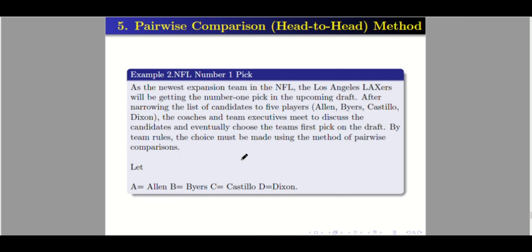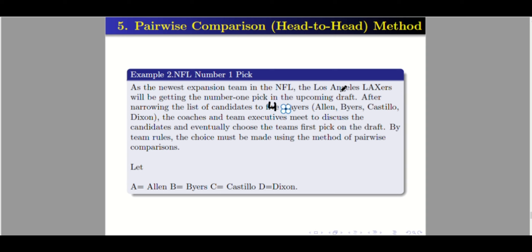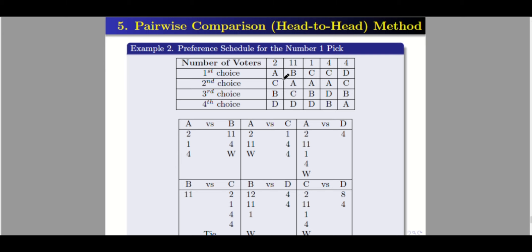For our last example: as the newest expansion team in the NFL, the Los Angeles Likers will get a number 1 pick in the upcoming draft. After narrowing the list to 4 players — Allen, Byers, Castillo, and Dixon — the coaches and executives must choose using the pairwise comparison method. Let A be Allen, B be Byers, C be Castillo, and D be Dixon. Since there are 4 candidates, there are 6 matchups.